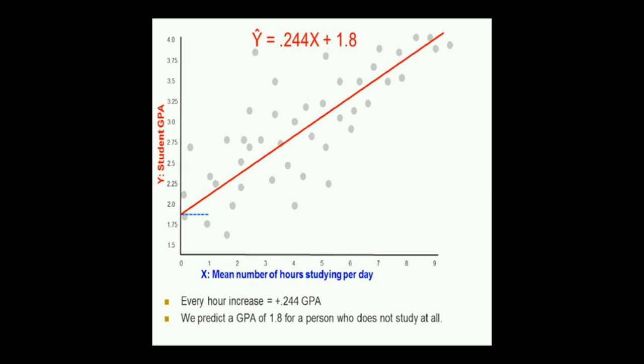Let's have a graphical representation. Here's a one-step increase in x from 0 to 1. Change in x is 1. The change in y was 0.244. You went from here up to here, a quarter of a point. And that works all the way along. No matter where you start, if you go up by one point on x, you also go up by 0.244 points on y. Every one hour increase in studying on average per day, we would predict 0.244 GPA points increase for the average student.